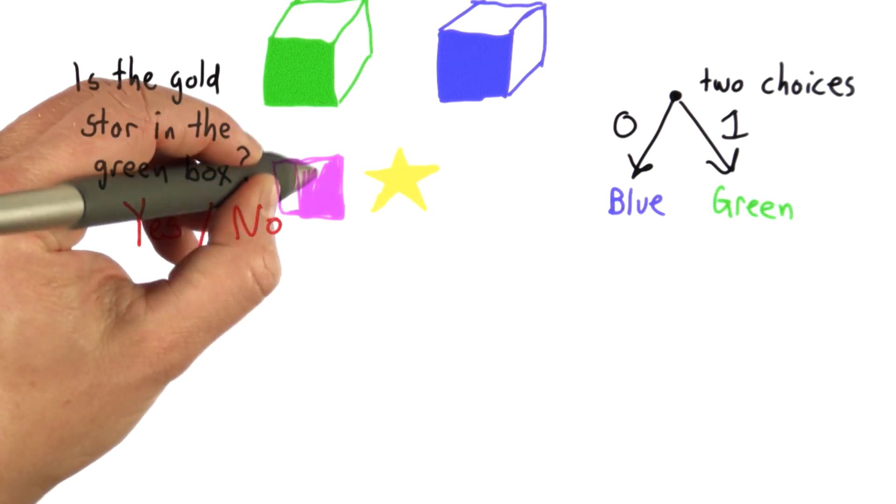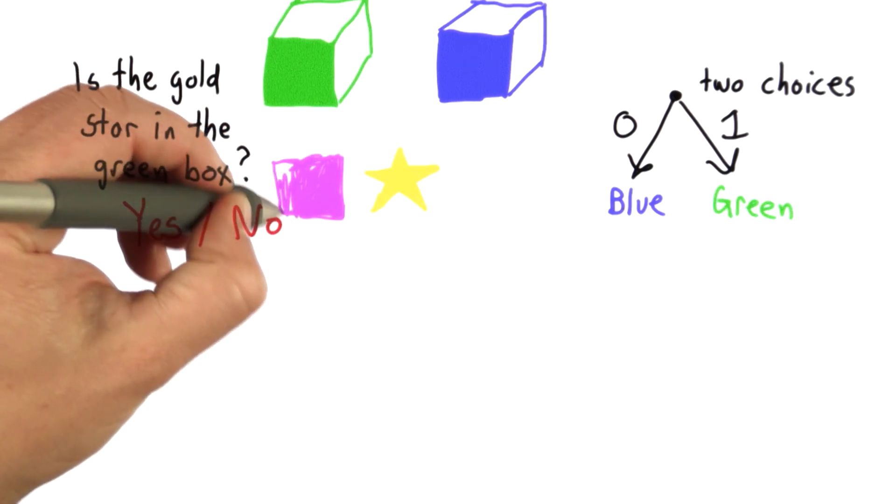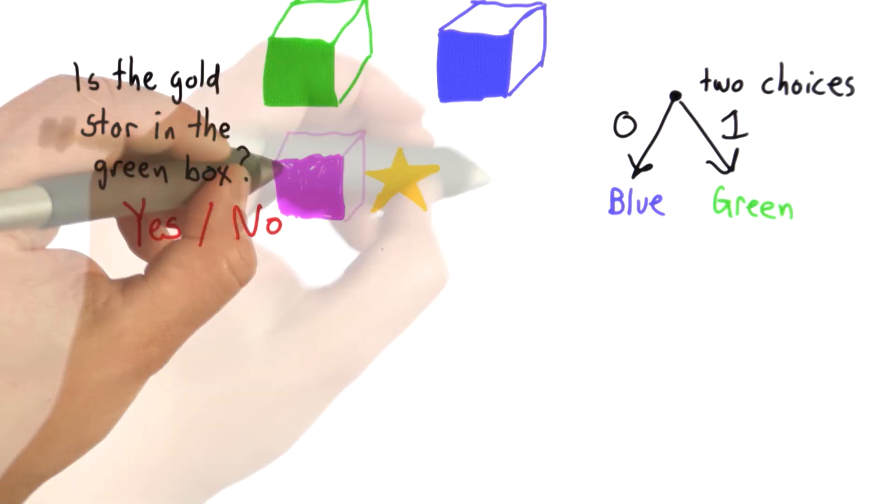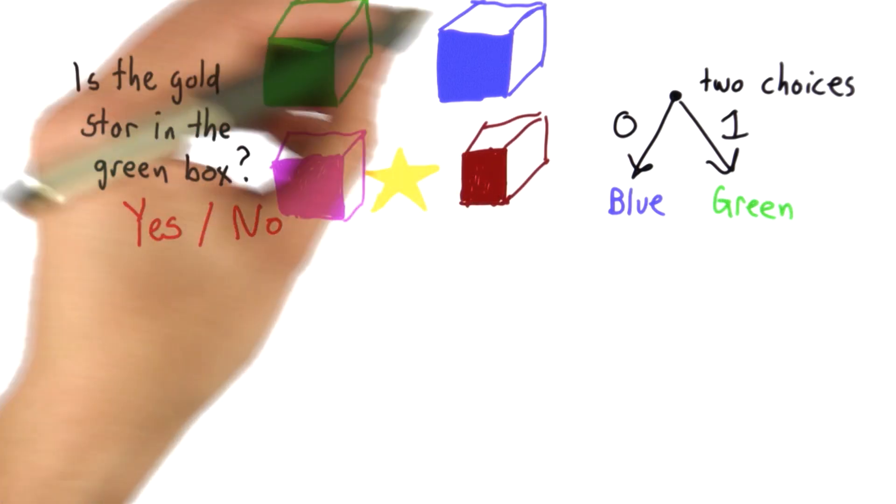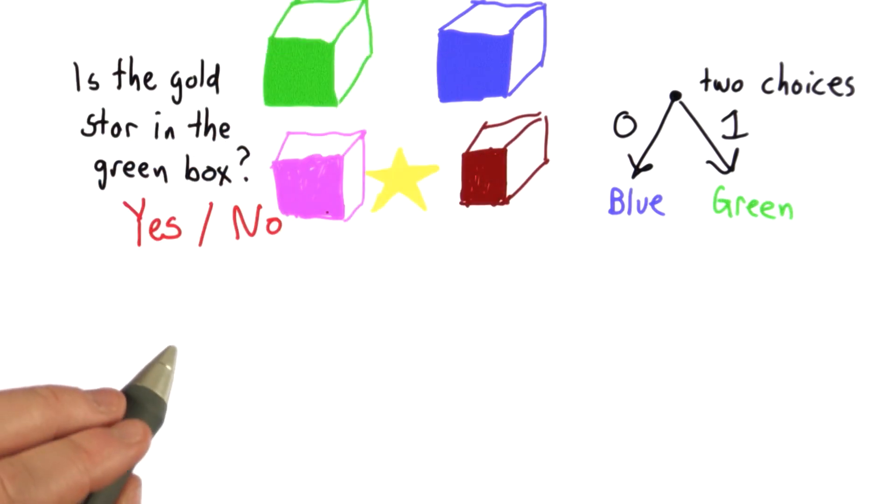now let's suppose there were four boxes. So let's say there's a purple box and there's a dark red box. So now there are four boxes. There's still only one gold star.